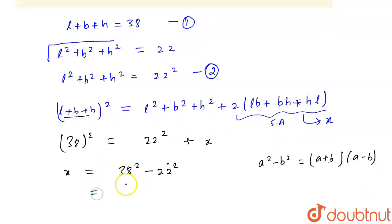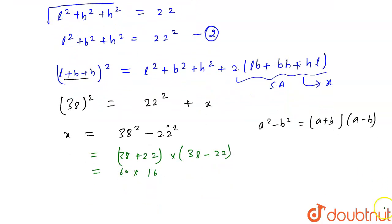So it will become 38 plus 22 into 38 minus 22. So it will become 60 into 16. 38 minus 22 is 16, and 3 plus 2 is 6. So if we multiply them, it will become 960.